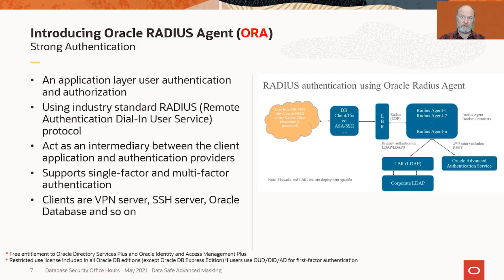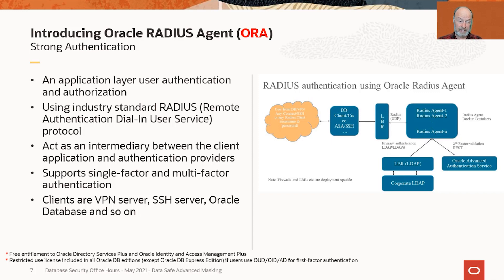You now have an Oracle-provided Radius server rather than having to use some third-party server. The Radius server is pretty simple — it runs as a Docker image. You can install it wherever you want as long as it has access to the database. This Radius Agent acts as an intermediary between the database and whatever authentication service you want to use, handling that authentication intermediation using the Radius protocol.